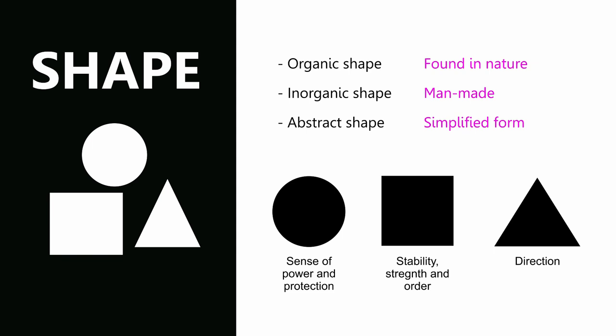A triangle has different meanings depending on the direction it points. If it points up, it means growth. If it points down, it means something is degrading. If it goes to the left, it means something is going backwards. And if it goes to the right, it means something is moving forward.